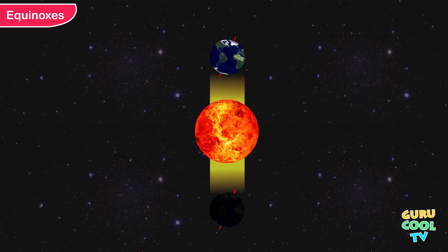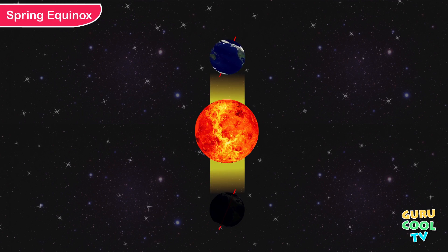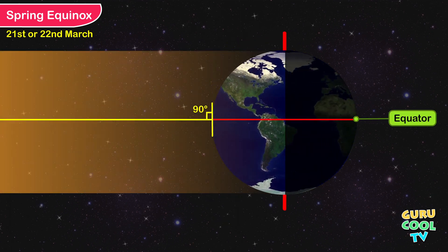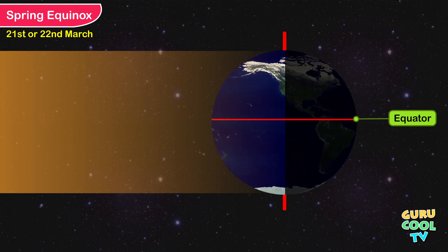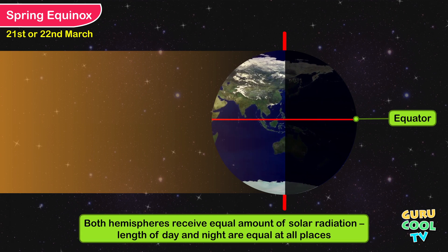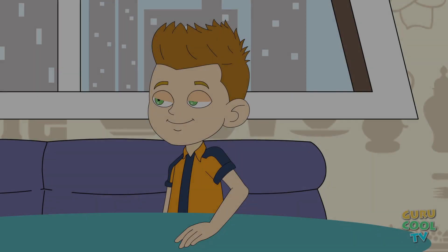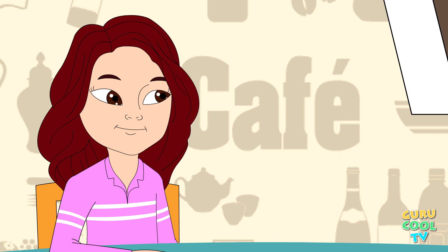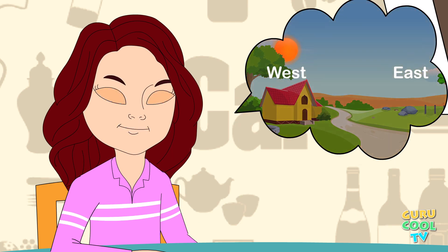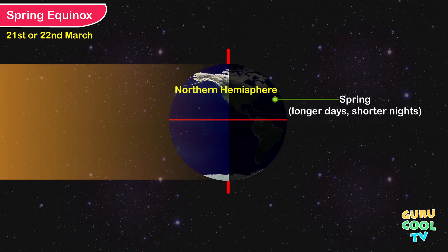Equinoxes are days on which the overhead Sun is on the equator, giving day and night of equal duration at all places on the Earth. Spring Equinox: on the 21st or 22nd of March, the overhead Sun is over the equator, making it receive maximum sunlight. On this day, both hemispheres receive a similar amount of solar radiation, and equal length of day and night at all places on Earth is observed. On this day, the Sun rises in the exact east and sets in the exact west. After this day, there is spring in the northern hemisphere with longer days and shorter nights.